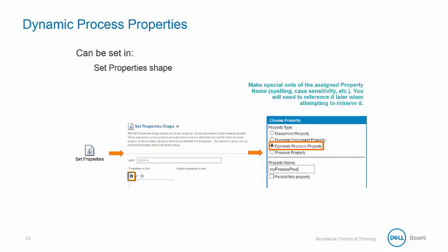Dynamic process properties can be set in the Set Property shape. Keep in mind, when setting the dynamic process property name, you need to remember the exact name assigned, because it is spelling and case sensitive.